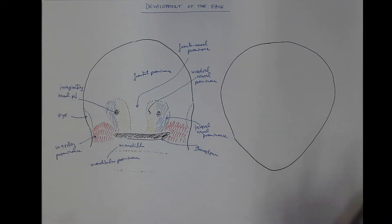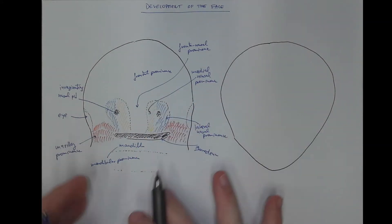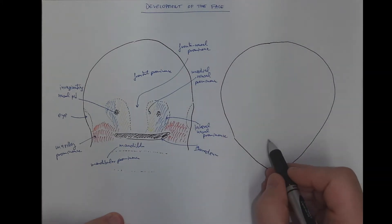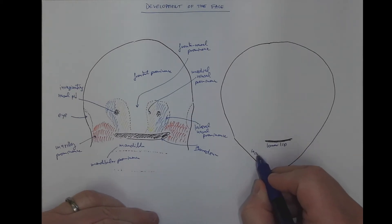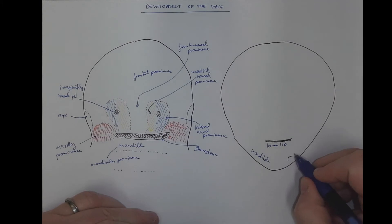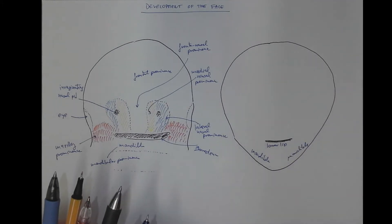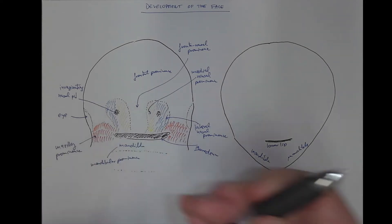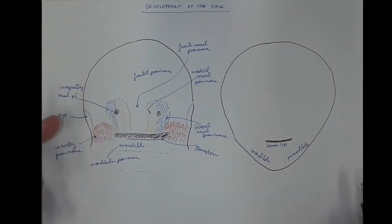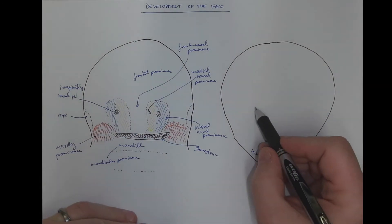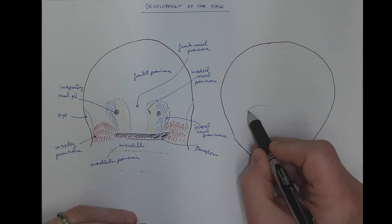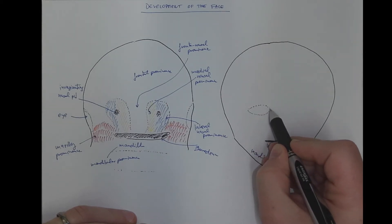So after many shifts, movements, differential growth of these components, we got the mouth cavity with the lower lip here, the mandible. And the eyes will shift into their frontal position, approximately like this.